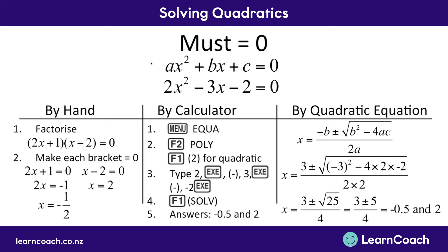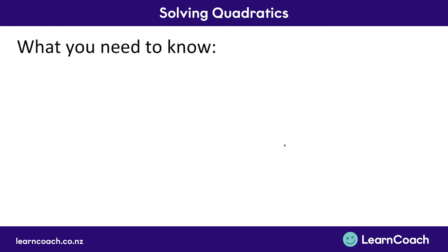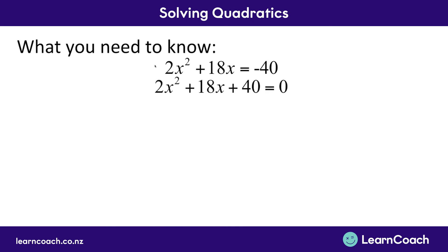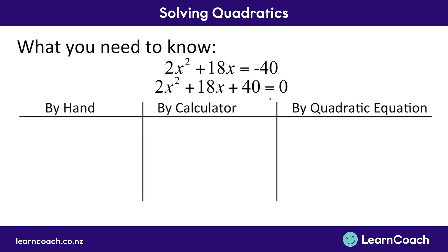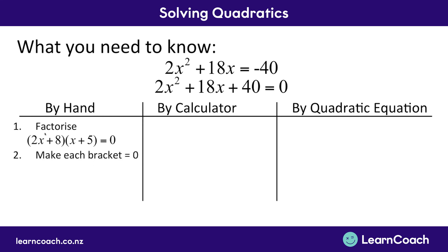So all three methods give you the same answer. Your calculator might be the easiest way to do this, but if you learn the quadratic equation, it opens you up to excellence level questions. What you need to know is that you have a quadratic expression, you must make it equal to zero — that's critical — and you have to remember that we have an a, a b, and a c. There are three ways you can solve this: the first is by hand, where you factorise the equation first after it equals zero, putting it into two sets of brackets.